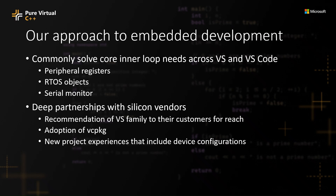As part of this, we're also partnering deeply with silicon vendors. We're working with them to get recommendations of the Visual Studio family for their customers to reach embedded developers, because embedded developers really start with the hardware. We're also adopting vcpkg — we've added capabilities there that help with the big challenge of tool acquisition. There are new capabilities around artifacts that help bootstrap a dev box based on a manifest that describes what compilers are necessary and can restore those on the developer machine. We're also working with silicon vendors on new project experiences that include the device configurations necessary to target the hardware.